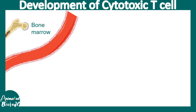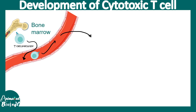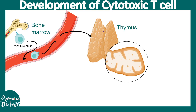They all start in the bone marrow, where hematopoietic pluripotent stem cells give rise to lymphoid and myeloid progenitors. Lymphocytes are lymphoid progenitor derivatives. The T cell precursor leaves the bone marrow, enters the bloodstream, and eventually travels to the thymus — the training school for T cells.